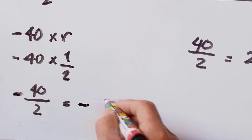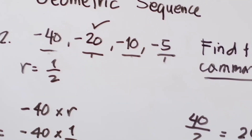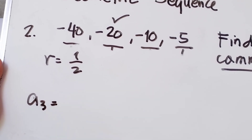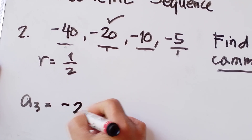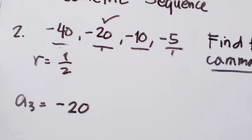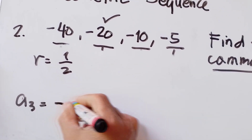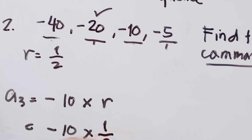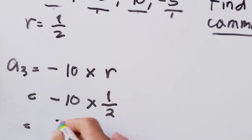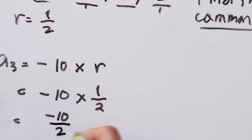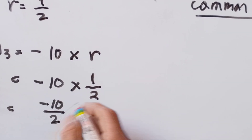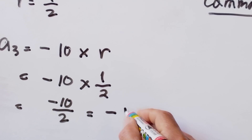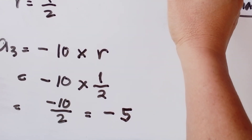Our denominators are a1, a2, and a3. Now let us substitute the values: a2 over a1 is 6 over 2, equal to a3 over a2 which is 18 over 6, and then the last ratio is a4 over a3 which is 54 over 18.